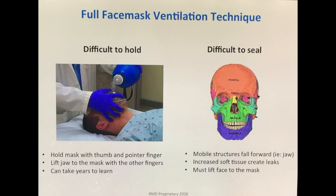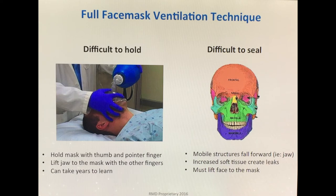One major disadvantage of full face mask ventilation is that it's difficult to create a seal. First, the jaw is a mobile structure — it's hard to keep the jaw from moving and the mouth closed, and any time the jaw moves forward, it worsens the upper airway obstruction. Second, there is a lot of soft tissue around the mouth, such as the cheeks, making it very difficult to push the mask down and seal. Third, it's hard to lift the face to the mask, especially in obese or morbidly obese patients where the jaw and mouth are pretty heavy.